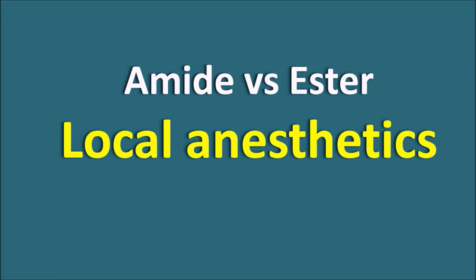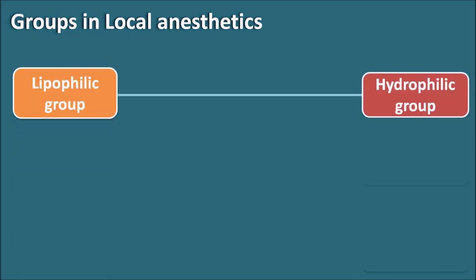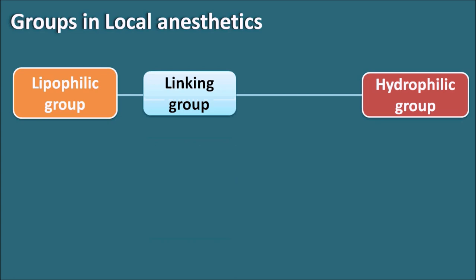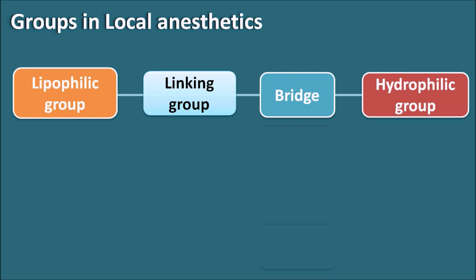Today we will discuss the differences between amide and ester local anesthetics. First of all, let us see what are the groups in local anesthetics. Local anesthetics have both a lipophilic group as well as a hydrophilic group. These lipophilic and hydrophilic groups are connected by a linking group, and this linking group can have a small bridge between the hydrophilic group. So a local anesthetic will have a lipophilic group, linking group, bridge, and hydrophilic group.